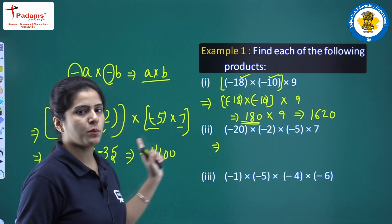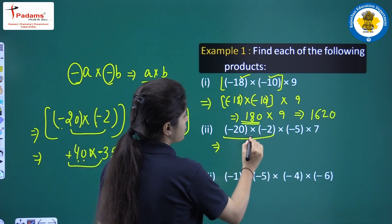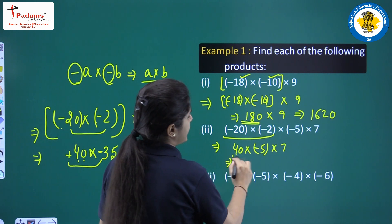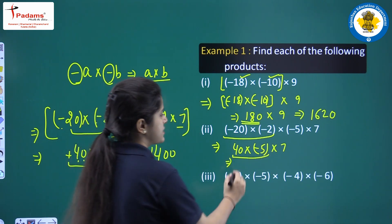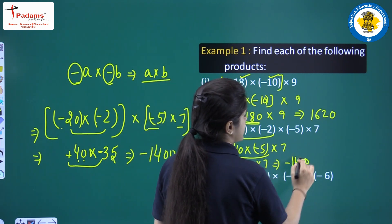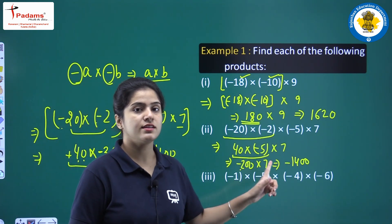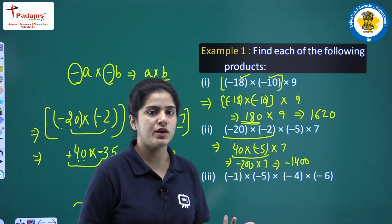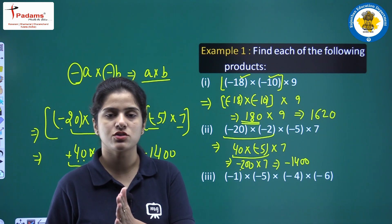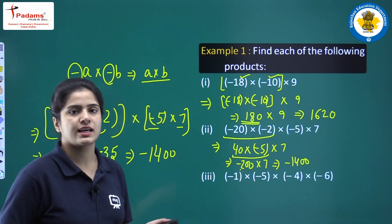We can also do it by one more method. First, minus 20 into minus 2 equals 40. Then 40 into minus 5 equals minus 200. Minus 200 multiplied by 7 equals minus 1400. Also, the negative integers appear three times — that is an odd number of times in the multiplication — so the product will also contain a negative integer. This was all about the second part.